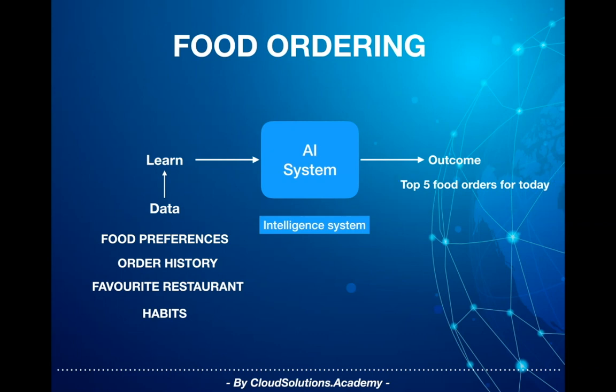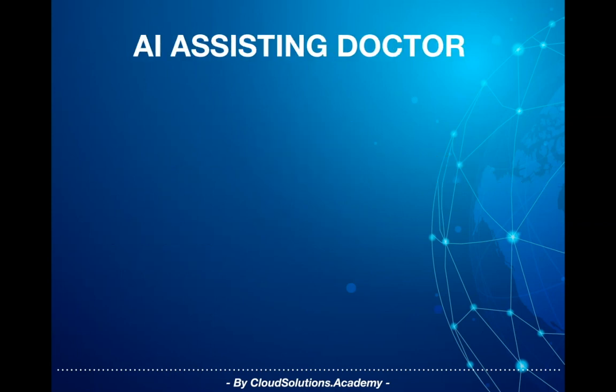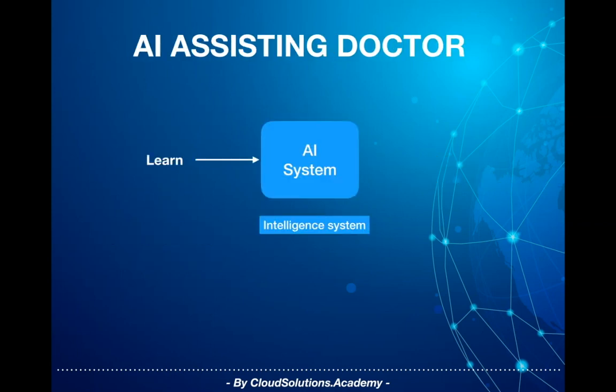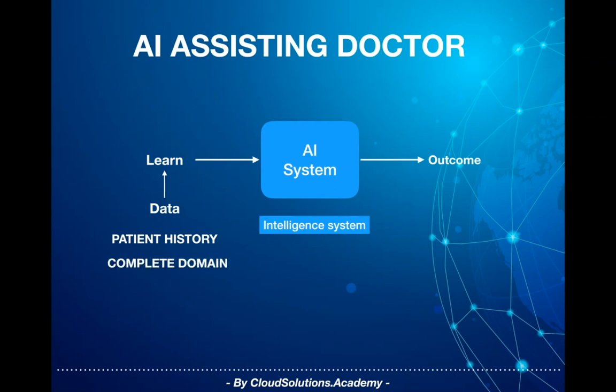Similarly, if an AI is assisting a doctor in providing options for cancer treatment, the system must have a complete patient medical history, must understand the complete cancer domain and terminology, and also periodically learn any new treatments or findings from medical journals.